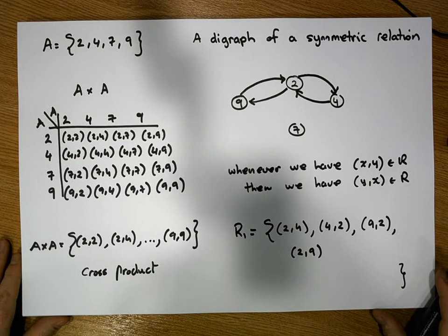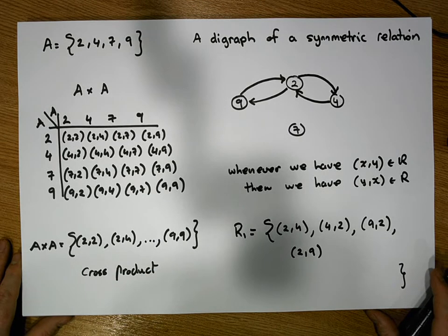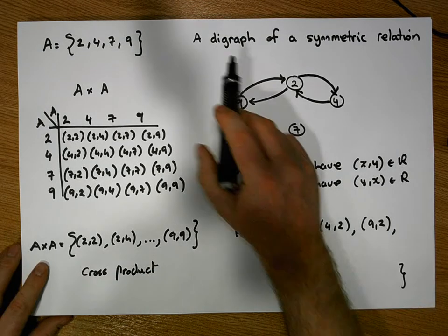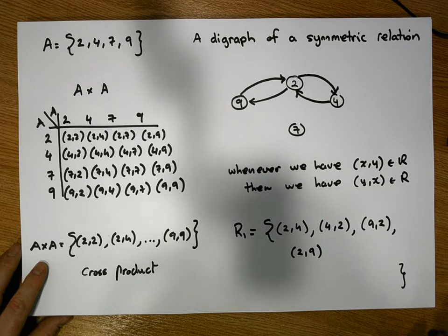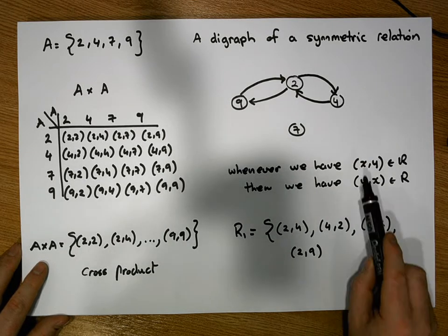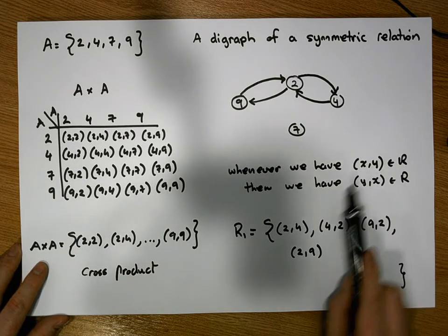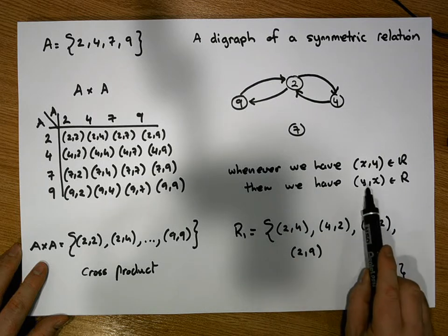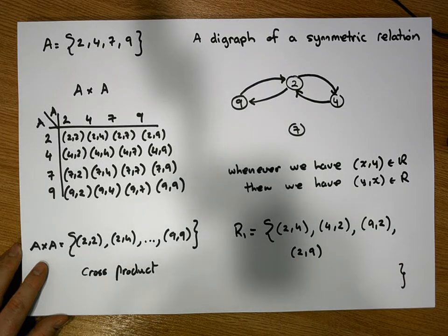So guys, I hope that video, that short video helped us to understand what a symmetric relation is. A symmetric relation being a relation where whenever you have an ordered pair (x,y), you must also have an ordered pair (y,x).